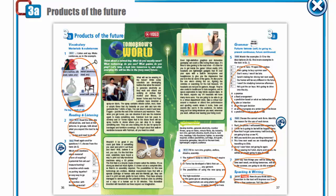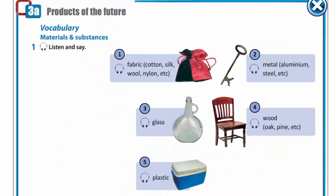Now let's open your books at page 36. We are going to talk about products of the future. Exercise 1. Materials and substances.